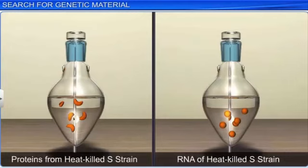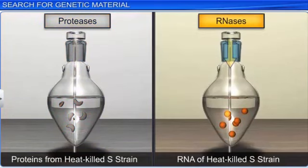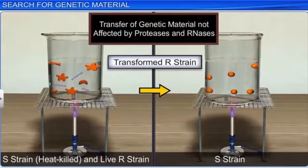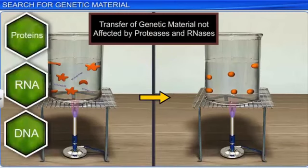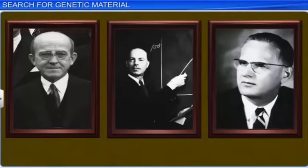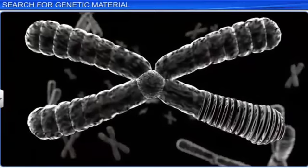Further, the scientists also discovered that addition of proteases, or protein digesting enzymes, and RNases, or RNA digesting enzymes, did not affect the transformation. This led to the conclusion that proteins or RNA were not transforming substances, and implied that DNA was the cause for the transformation. Thus, through their experiments, Oswald Avery, Colin McLeod, and Maclyn McCarty concluded that DNA is the hereditary material in most living organisms.